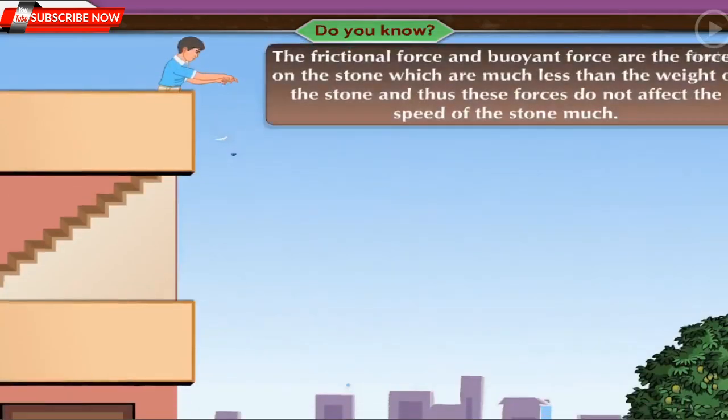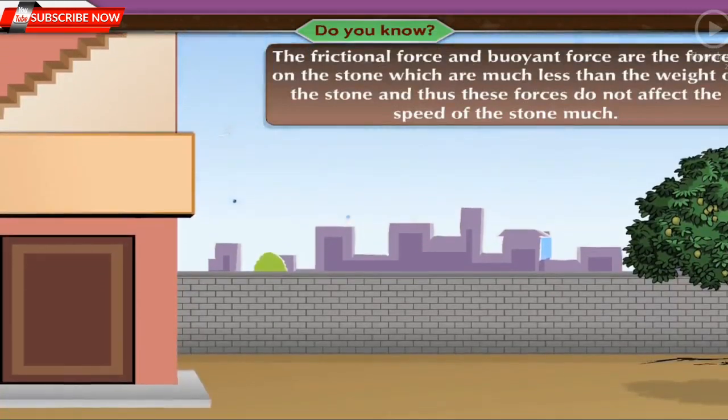The frictional force and buoyant force are the forces on the stone which are much less than the weight of the stone, and thus these forces do not affect the speed of the stone much.